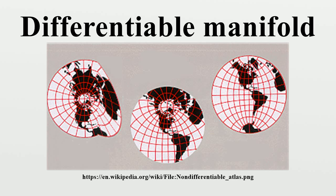There are a number of different types of differentiable manifolds, depending on the precise differentiability requirements on the transition functions. A differentiable manifold is a topological manifold equipped with an equivalence class of atlases whose transition maps are all differentiable. A C-k manifold is a topological manifold with an atlas whose transition maps are all k times continuously differentiable. A smooth manifold, or C-infinity manifold, is a differentiable manifold for which all the transition maps are smooth — that is, derivatives of all orders exist — so it is a C-k manifold for all k. An equivalence class of such atlases is said to be a smooth structure.